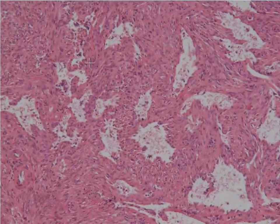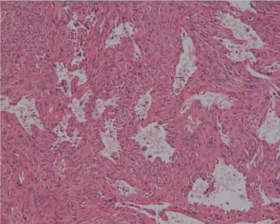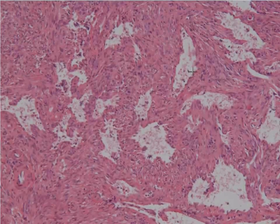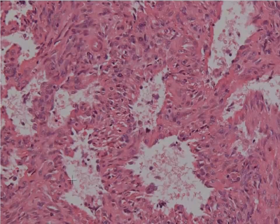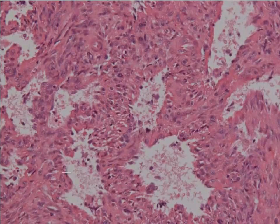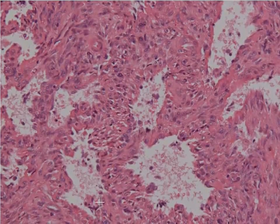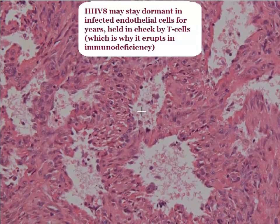If we go to one of the areas with the angulated vasculature that hasn't been replaced with the spindly cells, you'll see that you have these odd-shaped vascular spaces. And if we go down to high power, you can see that they are indeed lined by endothelial cells — you can see a layer of endothelial cells, like this one right here, lining these vascular spaces.